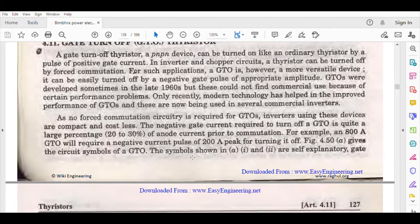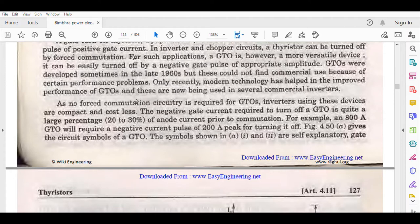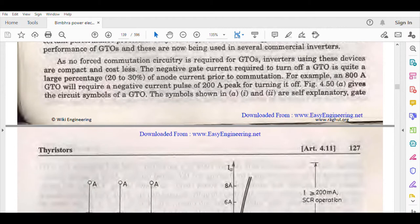As no forced commutation circuitry is required - no forced commutation we are not doing in GTO - inverters using these devices are compact and cost less. It is less costly and compact because there is no other circuit to turn off. So the cost will be less, the complexity will be less.